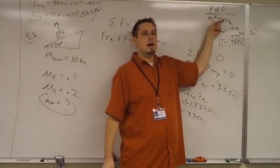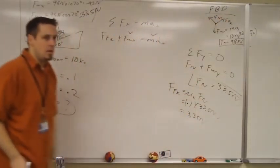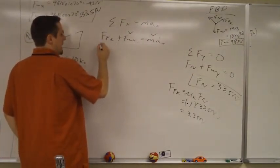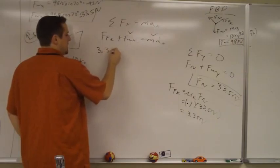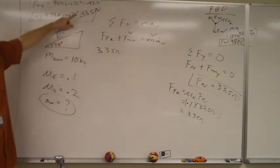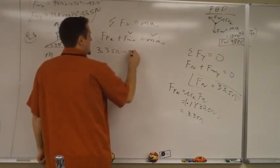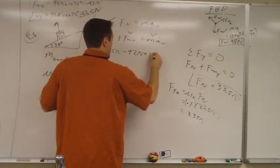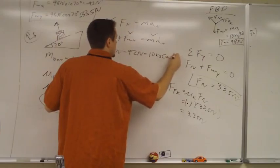In this case, friction is going in the positive direction, so I can just leave that alone. I don't need to add a negative. So now we plug in 3.35 newtons weight in the x minus 92 newtons equals the mass, which was 10 kilograms, times the acceleration.